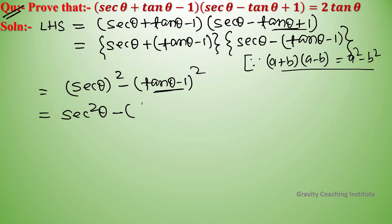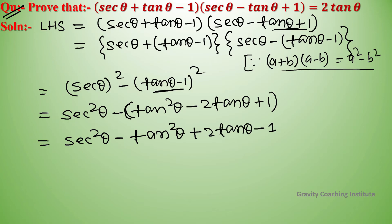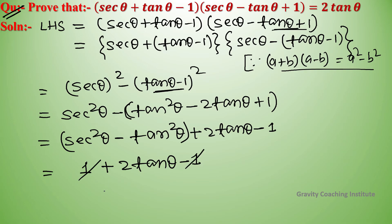This simplifies to sec²θ - tan²θ + 2 tan θ - 1. Since sec²θ - tan²θ = 1, we get 1 + 2 tan θ - 1 = 2 tan θ = RHS. Hence proved.